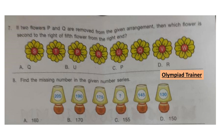Question 8: Find the missing number in the given number series. Look at the number series carefully. The pattern followed here is that 15 is subtracted from each number. So the answer will be option A: 160.